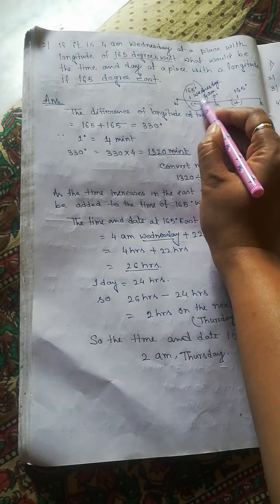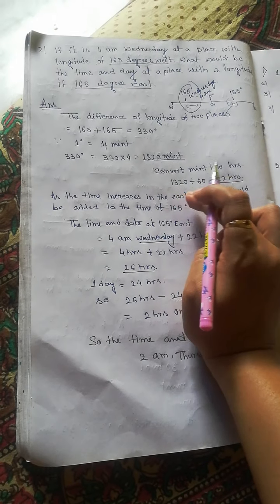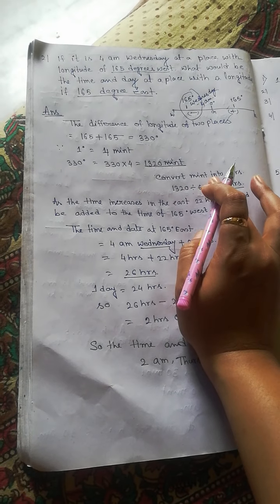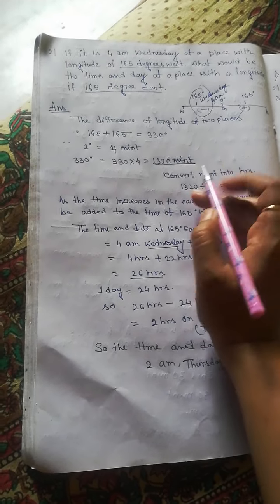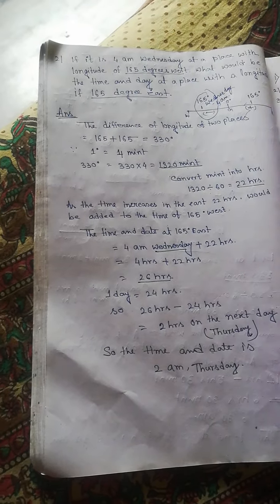And now it is 22 hours. So what do you do? 4 AM Wednesday, 4 hours plus 22 hours equals to 26 hours.